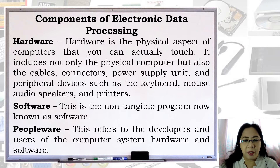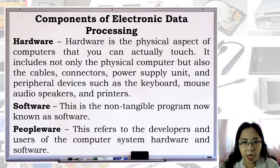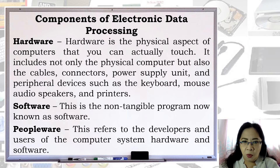Software is the intangible program known as software. Peopleware refers to the developers and users of the computer system, hardware, and software. Hardware is anything that you can touch and see with your eyes, while software you can only see but cannot touch. Peopleware refers to anyone who uses a computer either for work, studies, and for leisure.